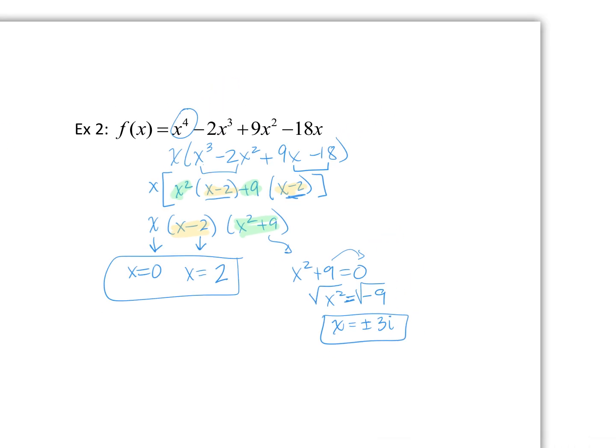Now, just for fun, I want to show you if I graph this guy, look at that. We can see where it's crossing the x-axis. It's crossing at 0, right? We knew that was going to happen. And it's crossing at positive 2. But these, we cannot see. Those are imaginary.